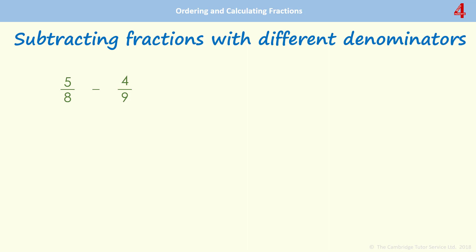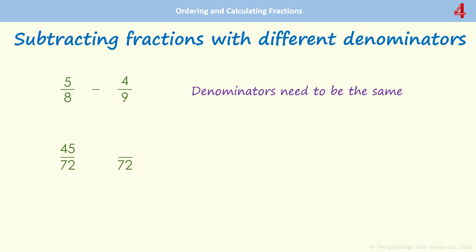Subtracting is exactly the same process, except that you're taking away once you've found the common denominators. 5 eighths take away 4 ninths. 8 and 9 share a factor of 1 but no others, so we need to find the lowest common multiple, and here that's 72. To get from 8 to 72 we multiply by 9, so we multiply the 5 by 9 — that's 45. To get from 9 to 72 we multiply by 8, so we multiply the 4 by 8, and that's 32. And remember that we're subtracting — how many over 72 do we have left? 45 take away 32, that's 13. Just check if it can be simplified, and it can't.